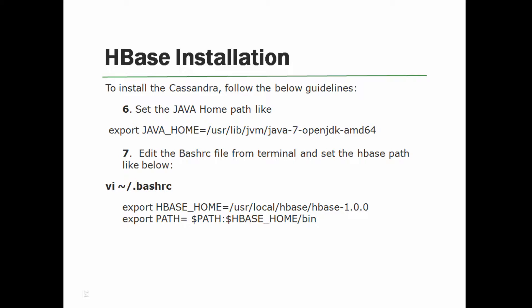The last step is to edit the .bashrc file and set the HBase home path. You can write it like: export HBASE_HOME to where it is located, /usr/local/HBase then the HBase folder name, then export PATH with $HBASE_HOME/bin.